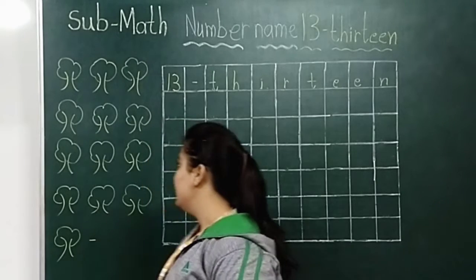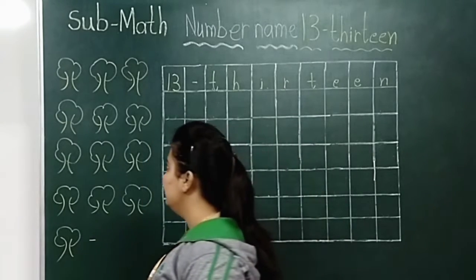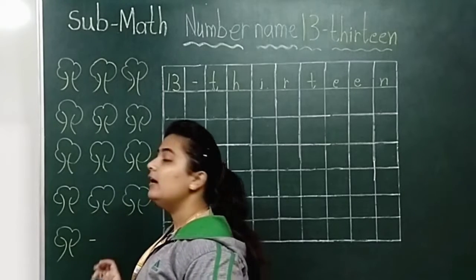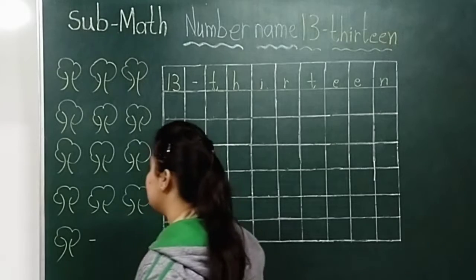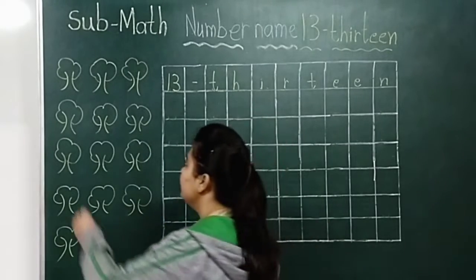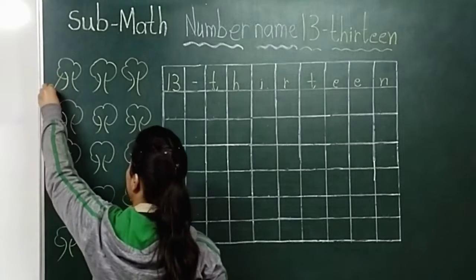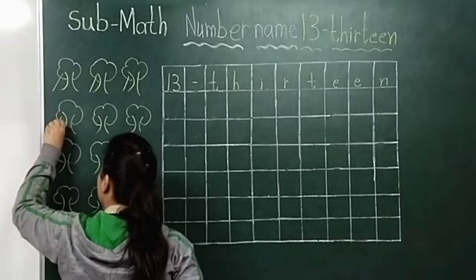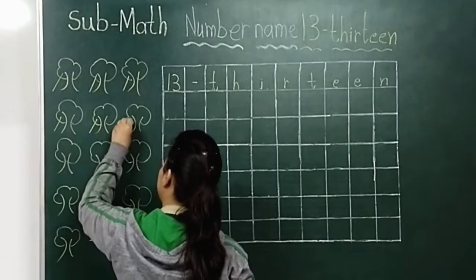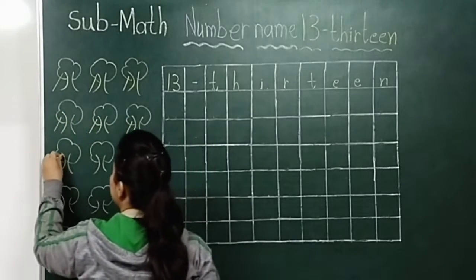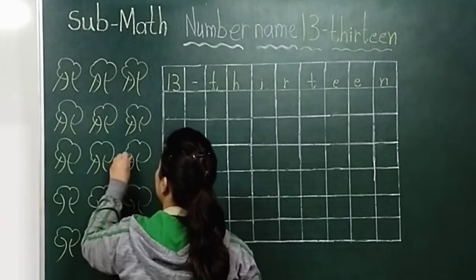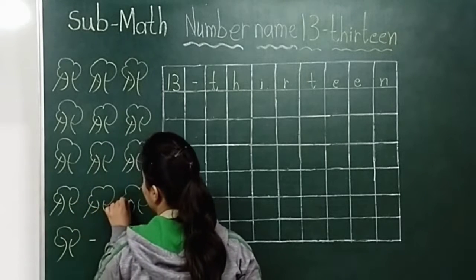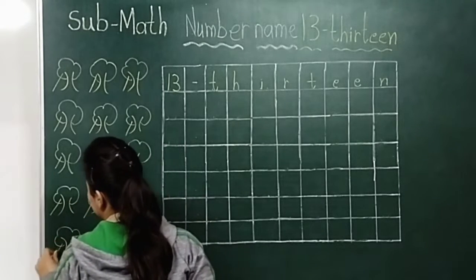Okay, so now first of all, look here. What are these? Trees. These are trees. So let's count. How many trees are there? 1, 2, 3, 4, 5, 6, 7, 8, 9, 10, 11, 12, 13.